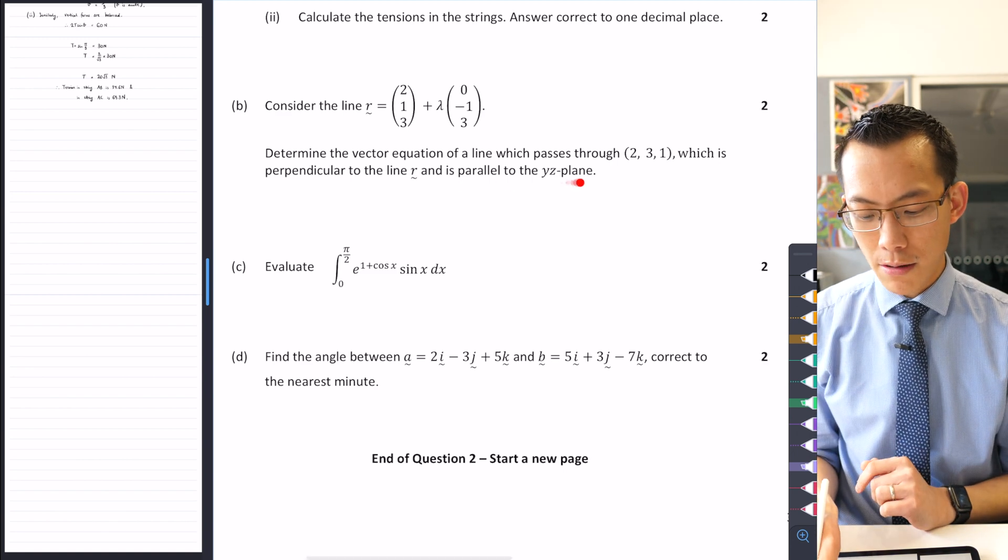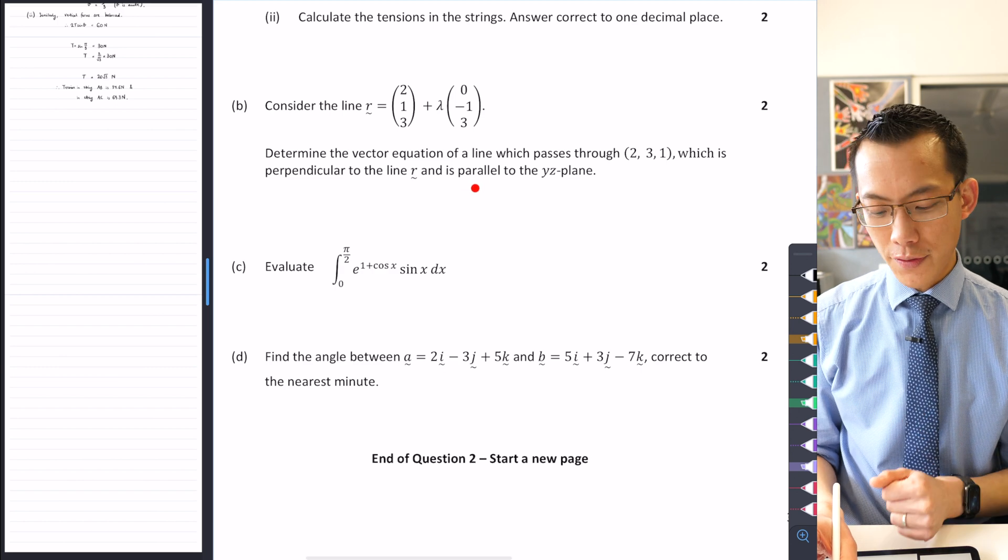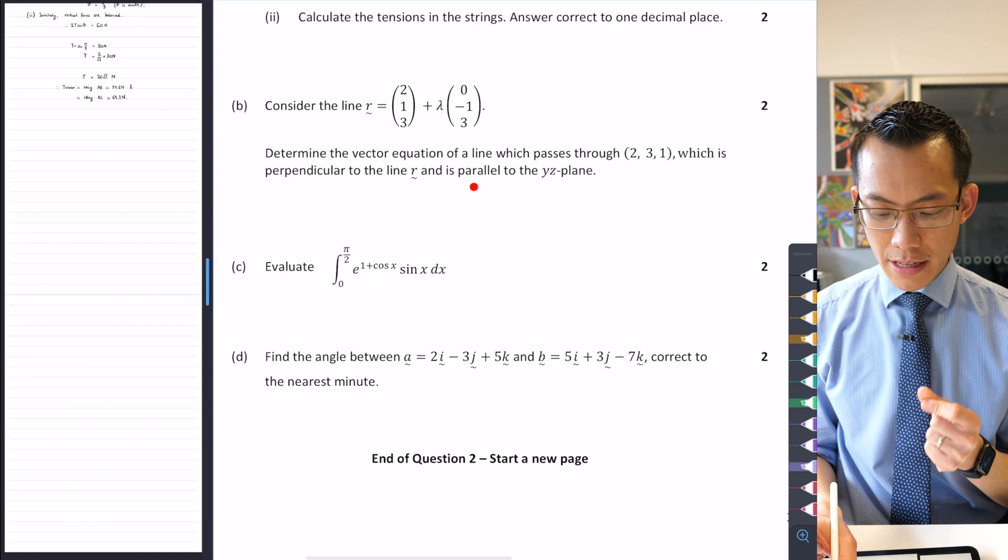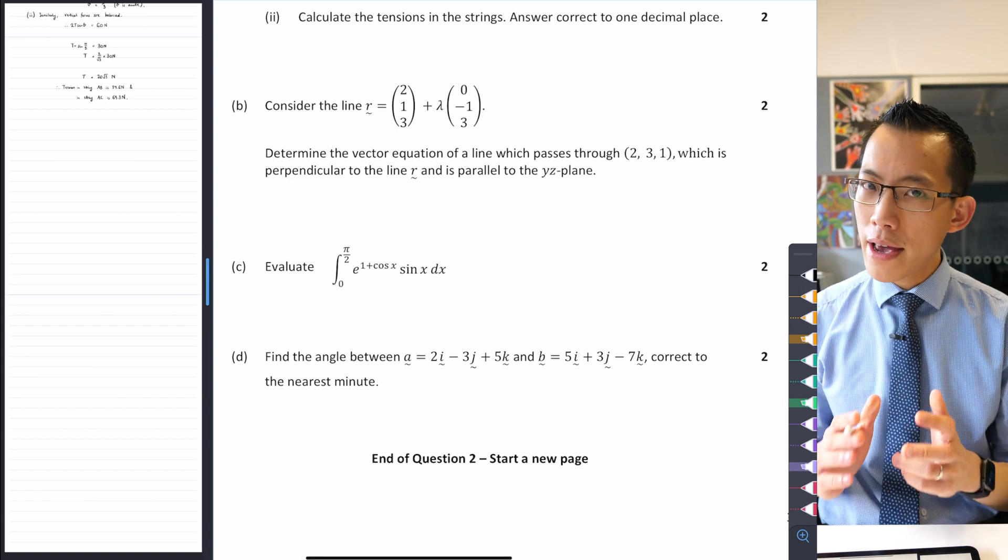Now that's all fine. Most people are pretty good at that. However, it's this last piece that most people completely missed. This new vector that we're trying to find out, not only is it perpendicular to line r, it's also said that it's parallel to the yz plane. Now why is this important?